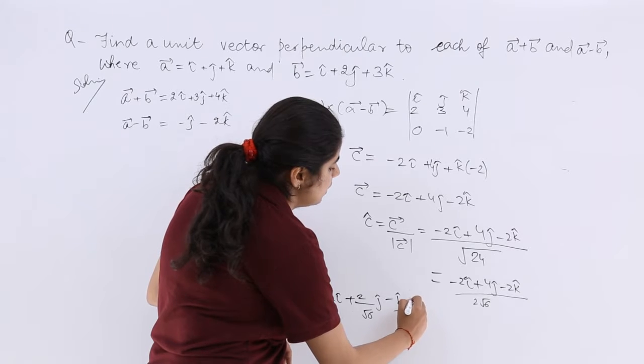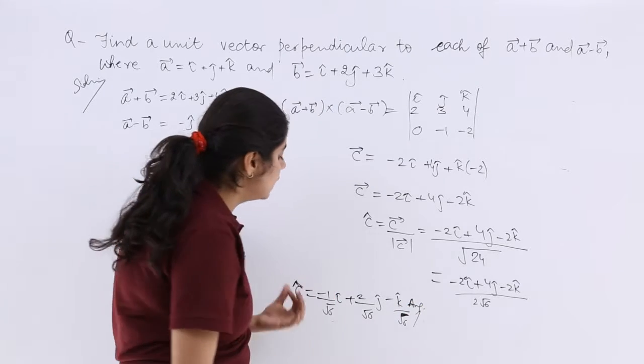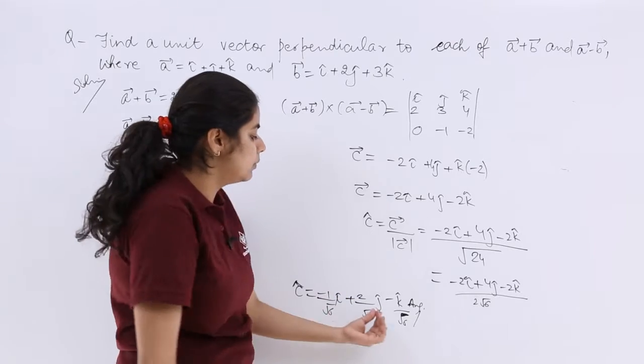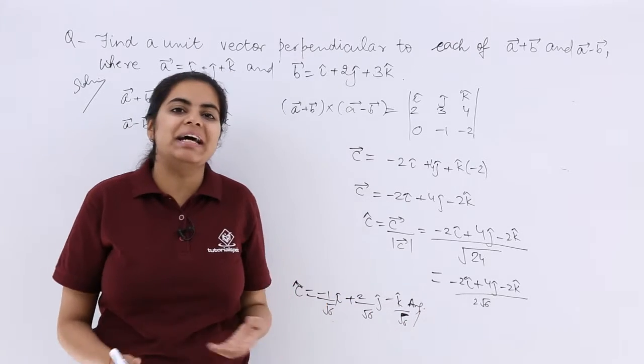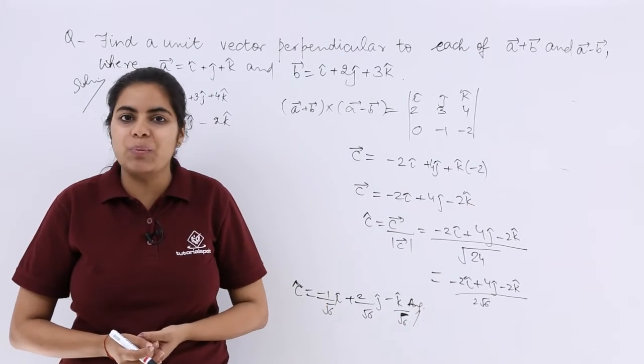And that is the answer. That is what is required. That is a unit vector. Here it is i cap term, j cap term, k cap term. And that is how we solve this type of a question.